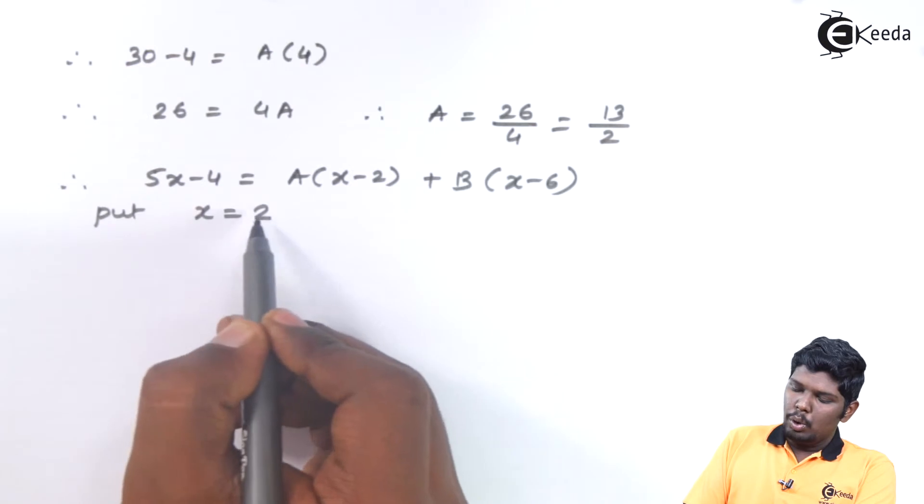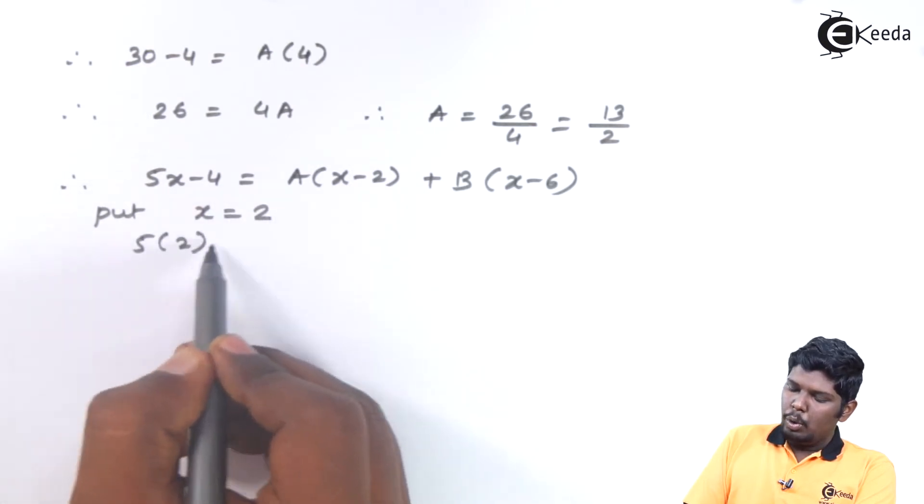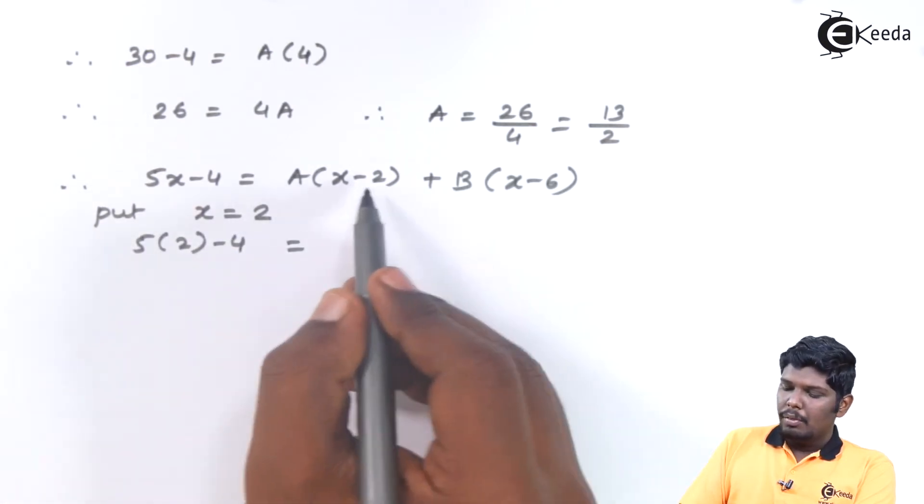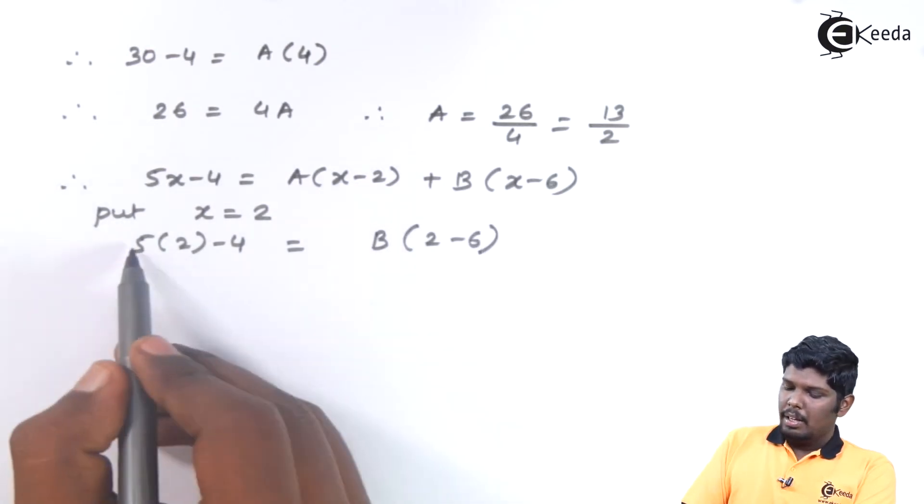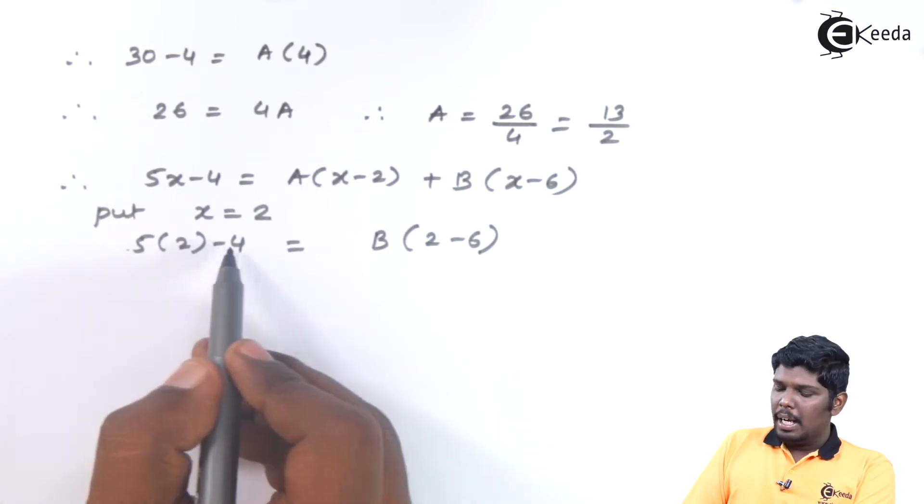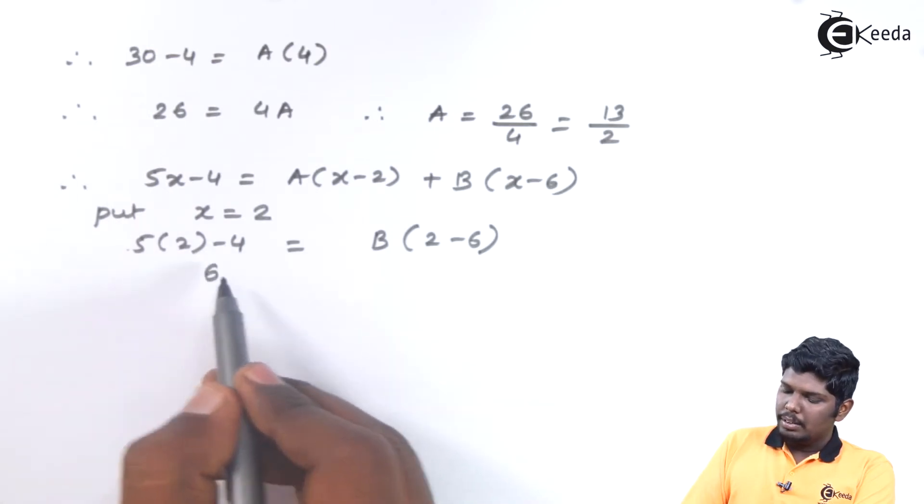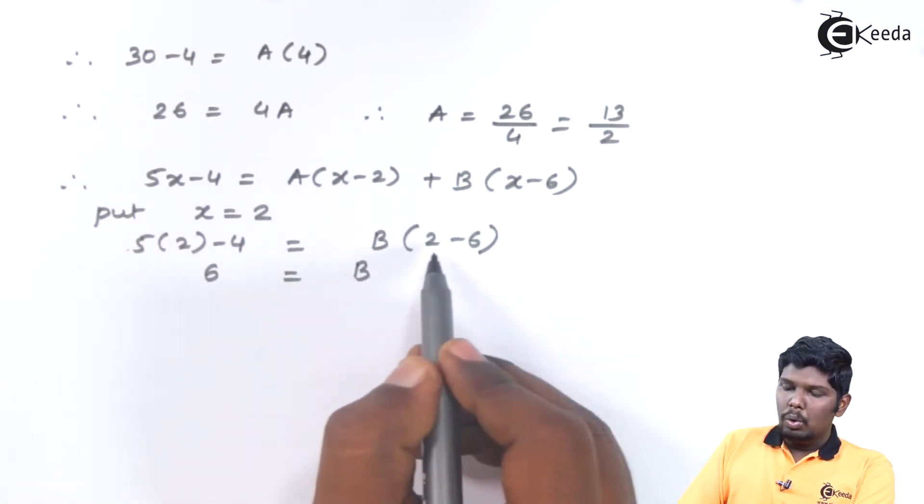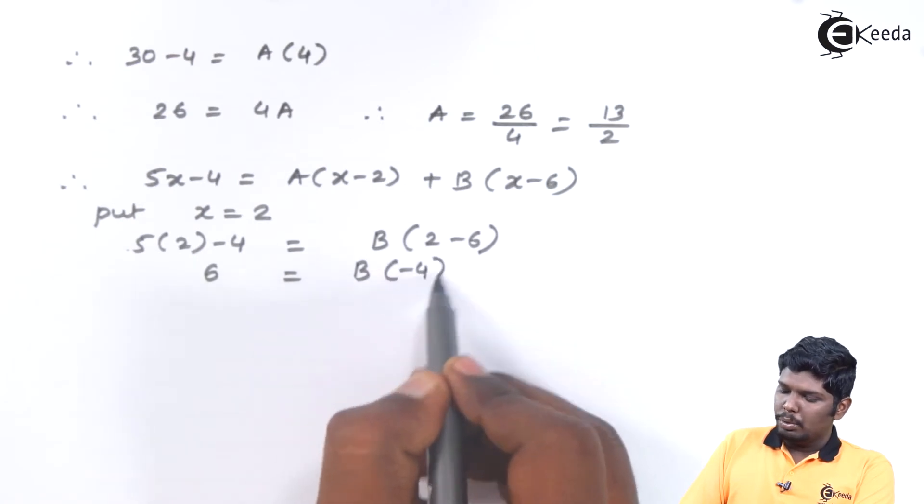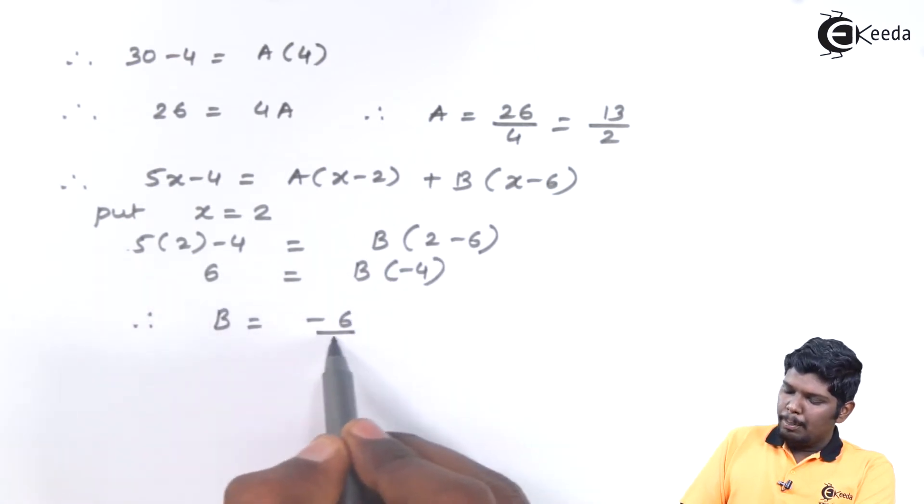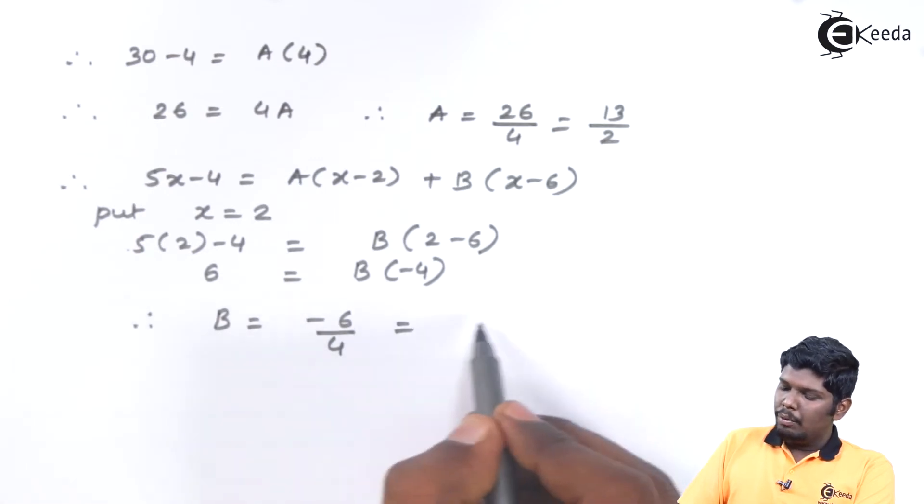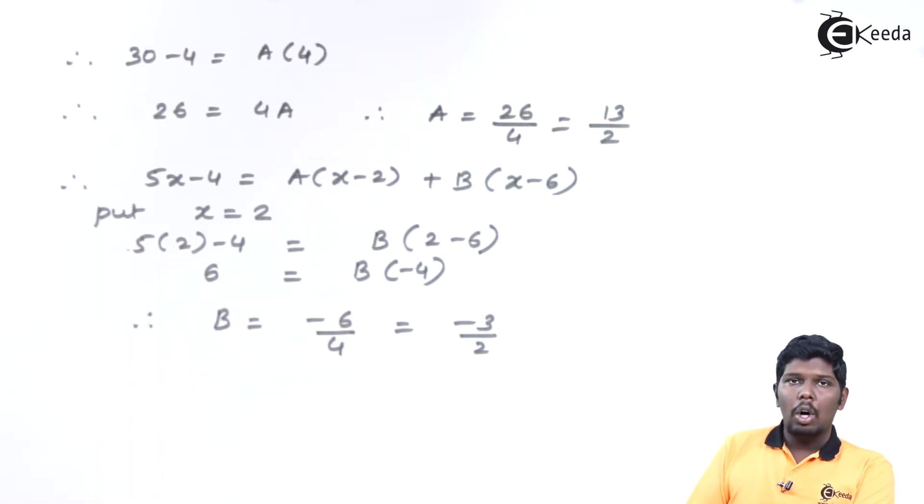Put x is equal to 2. We have 5 into 2 minus 4. First part will become 0 and second we have 2 minus 6. 5 into 2 is 10 and 10 minus 4 will give you 6. And b into 2 minus 6 will give you minus 4. Therefore the value of b will be minus 6 upon 4 which will further give you minus 3 upon 2 on simplification.